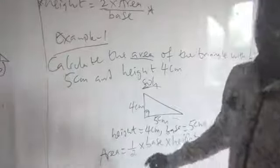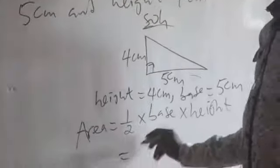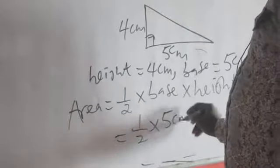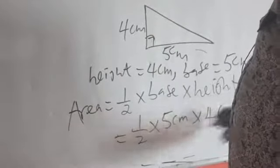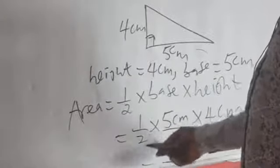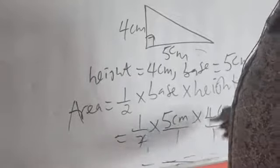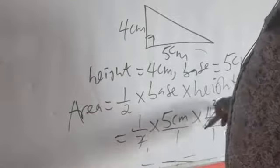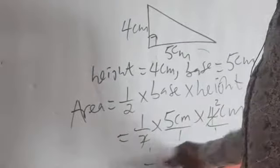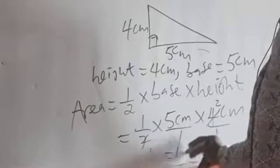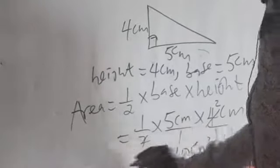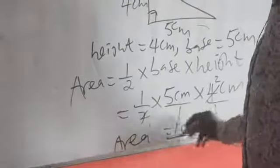The formula for area of triangle is half base times height. So area equals one-half times 5 cm times 4 cm. We can simplify: 2 divides into 4 to give 2, so we are left with 1 times 5 times 2 equals 10. Centimeter times centimeter gives centimeter squared. So the area of the triangle is 10 centimeter squared.